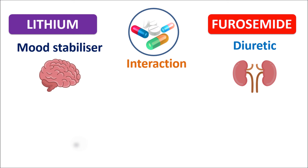What type of interaction is it — pharmacodynamic or pharmacokinetic? When drugs interact at their mechanism of action or site of action, it is called a pharmacodynamic interaction. When they interfere at any pharmacokinetic step such as absorption, distribution, metabolism, or excretion, it is called a pharmacokinetic interaction.